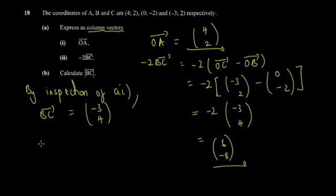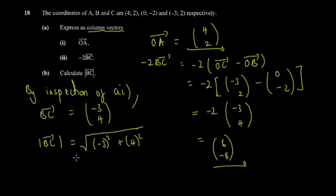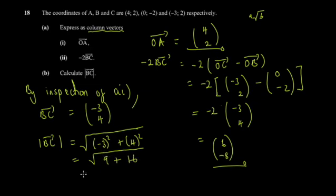The magnitude of a vector equals the square root of the sum of the squares of its components. So |BC| = √((-3)² + 4²) = √(9 + 16) = √25 = 5. Sometimes exact answers serve as validation that you're on the right track. The magnitude is 5 units.